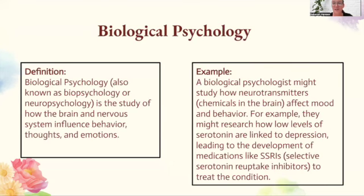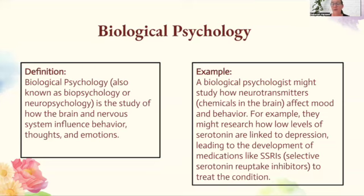The next one is biological psychology, also known as biopsychology or neuropsychology — the study of how the brain and nervous system influence behavior, thoughts, and emotions. A biological psychologist might study how neurotransmitters, the chemicals in the brain, affect mood and behavior. For example, they might research how low levels of serotonin are linked to depression, leading to the development of medications like SSRIs — selective serotonin reuptake inhibitors — to treat the condition.